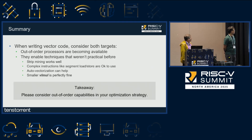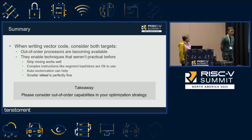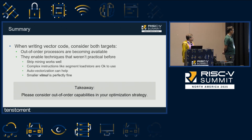In summary, when you are writing vector code, please consider both targets. Out-of-order processors, when available, enable techniques that were not practical before. Strip mining works well. Complex instructions like segment load/stores are okay to use. Auto-vectorization can help. And also, small LMUL is perfectly fine to use.